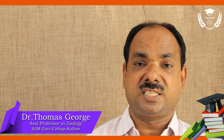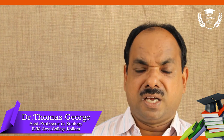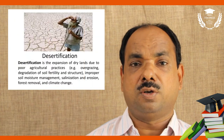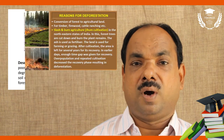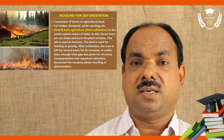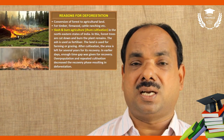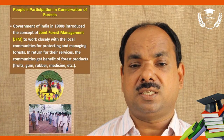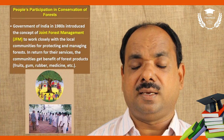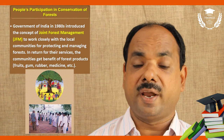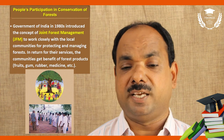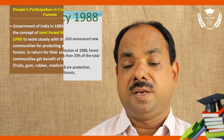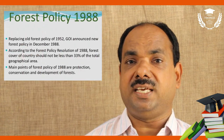One of the main reasons for the loss of biodiversity is deforestation. Slash and burn cultivation is called Jhum cultivation. Joint Forest Management started in the 1980s, and the National Forest Policy was established in 1988.